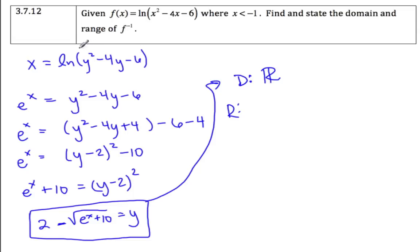So to do that, to find the domain, I need to take this piece on the inside of the ln, and I'm going to set it greater than 0. So y squared minus 4y minus 6 is greater than 0.